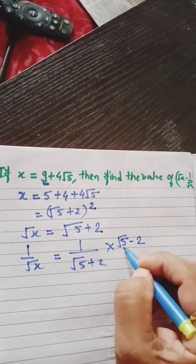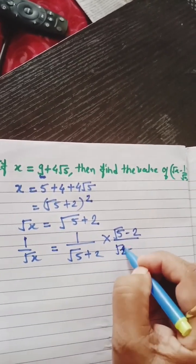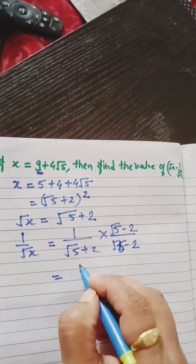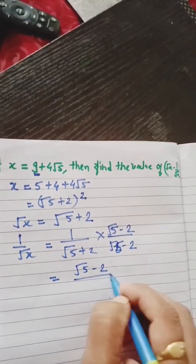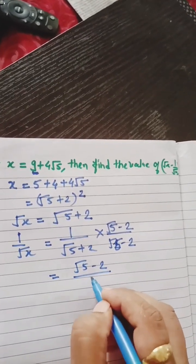Multiply by conjugate of denominator to numerator and denominator both. In the numerator, it will be root 5 minus 2 upon 5 minus 4, which equals 1.